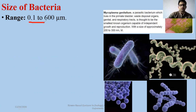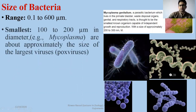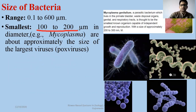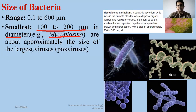Now let's move towards the size of bacteria. The overall bacterial size range is 0.1 to 600 micrometers. The smallest bacterium is Mycoplasma, approximately 100 to 200 nanometers in diameter — roughly equal to the size of the largest viruses, the poxviruses.